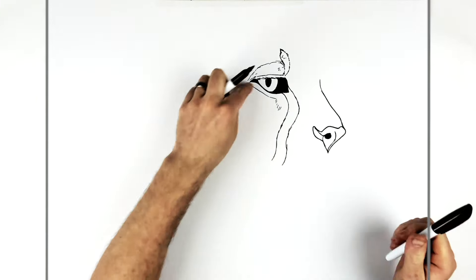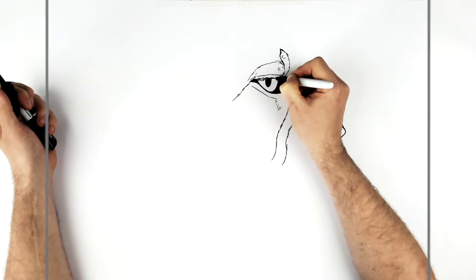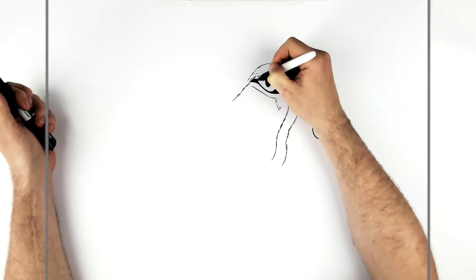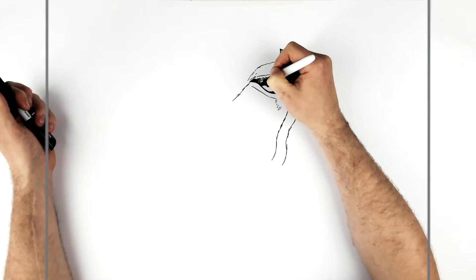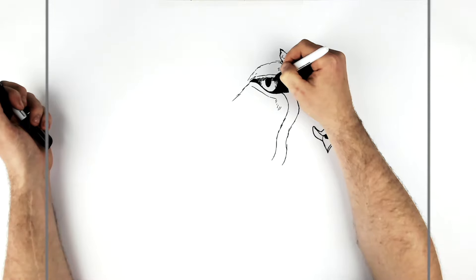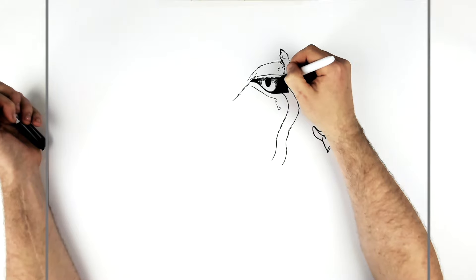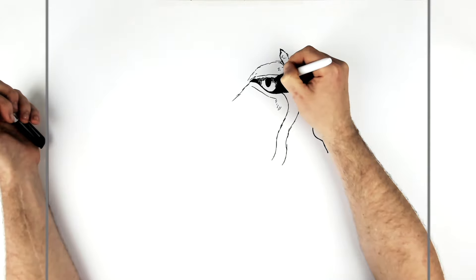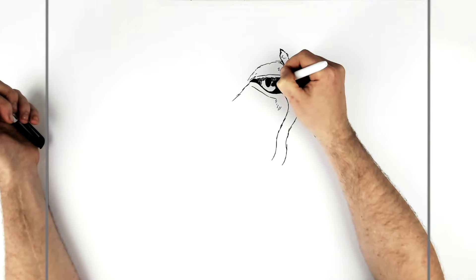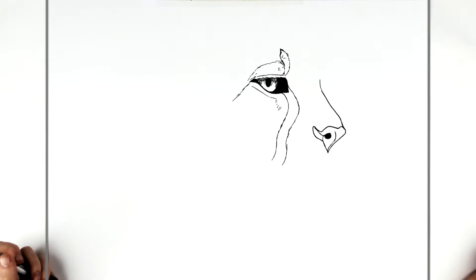I forgot to mention, underneath the eye you can add a shadow with some hatching lines, just to make it look a little bit three-dimensional. Just makes it look like there's a shadow underneath the iris.